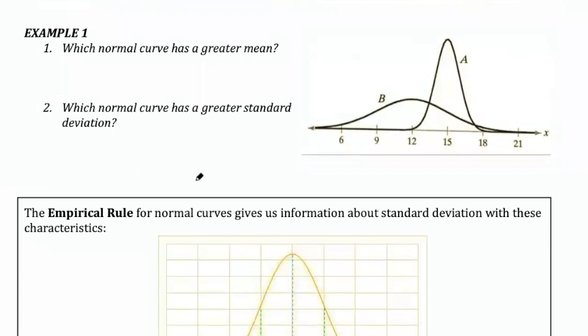So in example one, which normal curve has a greater mean? If you look at the two curves, A and B, remember the mean is the line of symmetry that's in the middle. So for B, it's approximately here. So the mean for B is 12. The mean for A, the line of symmetry would fall right here. So the mean would be 15. So obviously A has the larger mean.